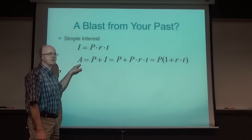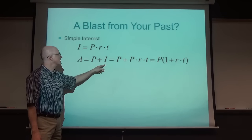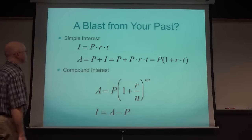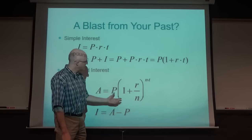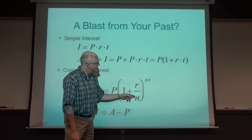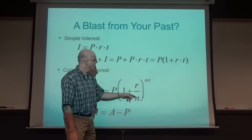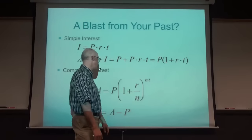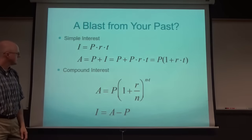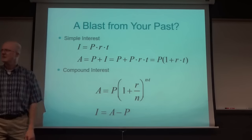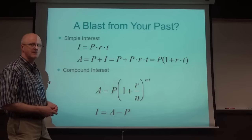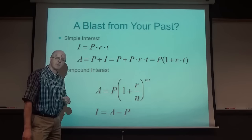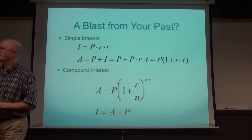The accumulated or future value of your money is the original principal plus the interest, which simplifies to P(1 + RT). For compound interest, take your principal and multiply by (1 + i/N)^(NT), where N is the number of compounding periods per year and T is the number of years, to get the future accumulated value. This is certainly something we'll cover throughout Financial Math for Actuarial Science, though we will mostly use different notation.